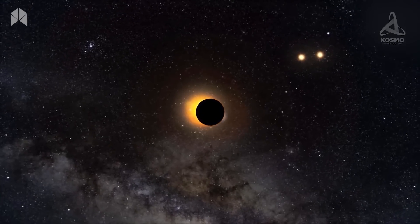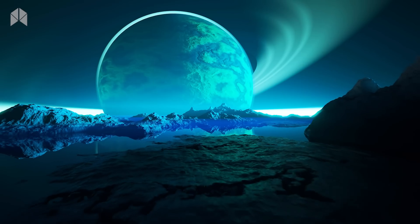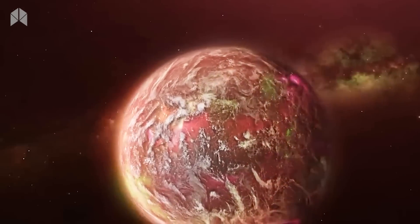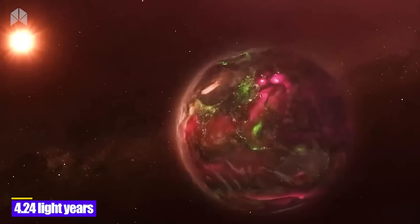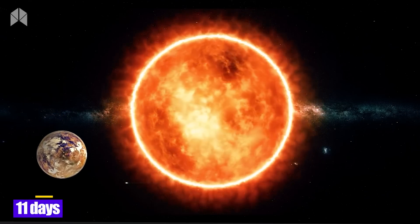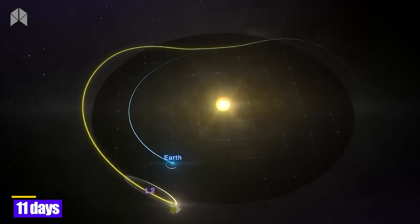Proxima b has been found to have a habitable zone, which means it has mountains and may have liquid water on its surface. Despite their distance from us of 4.24 light years, Proxima b has an orbital period of 11 days, making it relatively close in the big picture.